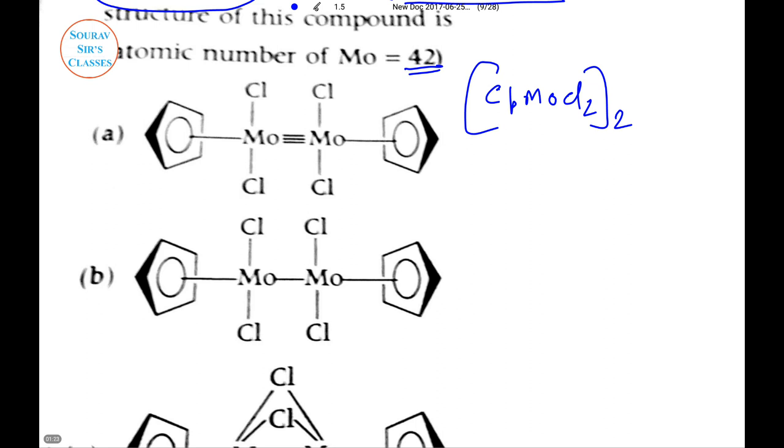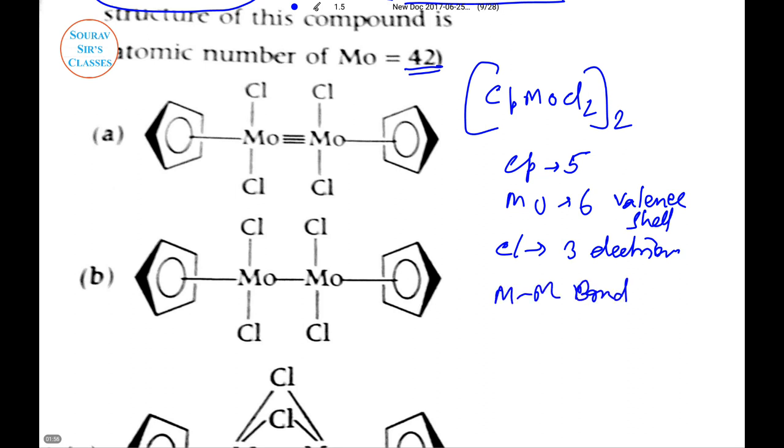If it follows the 18 electron rule, we know that Cp contributes 5 electrons to the metal Mo, Mo has 6 valence electrons, and Cl contributes 3 electrons to the metal.